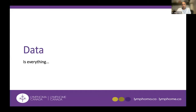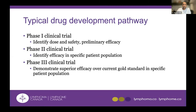It's important to recognize that data is really what drives what happens with new drugs. The typical drug development pathway traditionally follows these steps: phase one clinical trials, where a drug is being used in a human for the first time. The goal is to identify the appropriate dose, look at safety, identify the recommended dose to move forward, and ideally get a preliminary sense of whether the drug is effective.